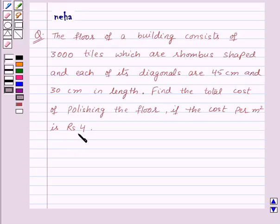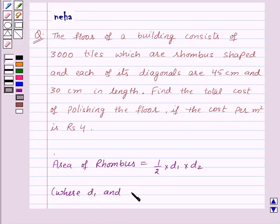Before proceeding to the solution, let's recall area of rhombus. Area of rhombus is equal to 1/2 × d₁ × d₂, where d₁ and d₂ are the lengths of the diagonals.